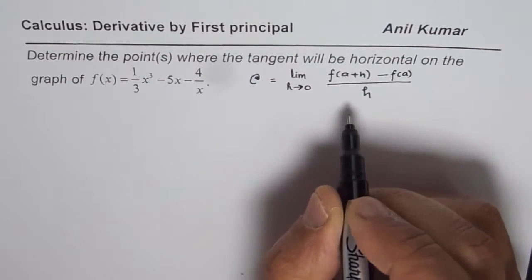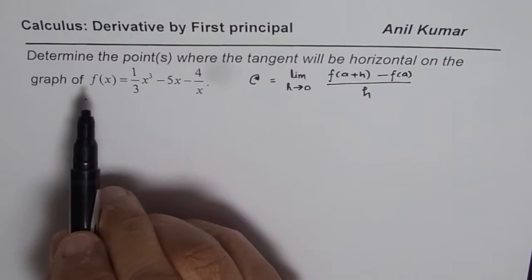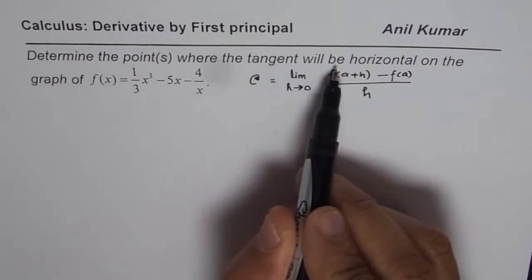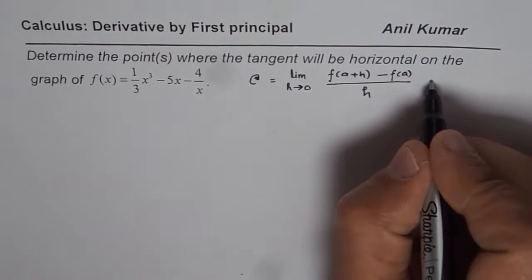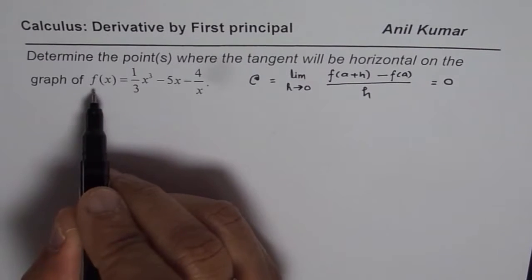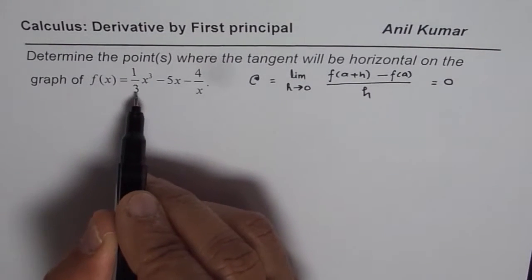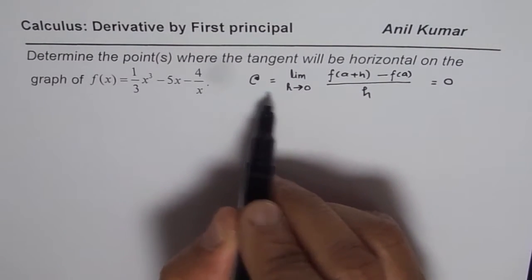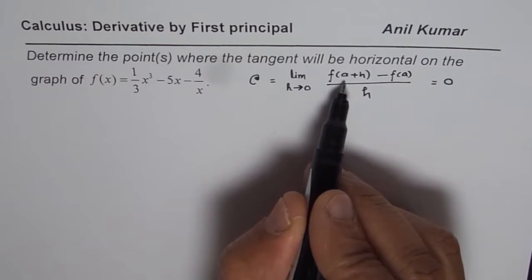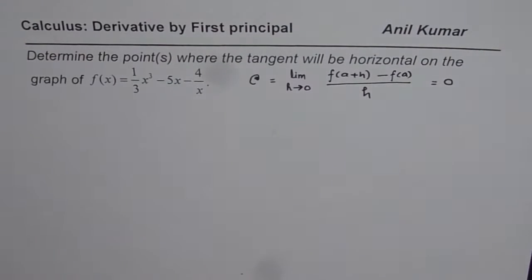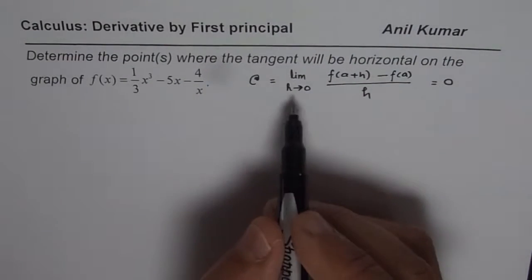That is the instantaneous rate of change. Now, the question says determine the points, so A could be the point where the tangent will be horizontal. That means the instantaneous rate of change should be 0, since the slope of a horizontal line is 0. So we will find a general expression for the instantaneous rate of change at A and then solve for A. All those values of A will be the points x = A with a horizontal tangent on the graph of the given function.